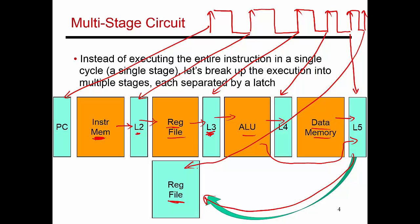You'll see that this entire operation takes about five cycles — five equal-size cycles. Cycle one, cycle two, cycle three, cycle four, and cycle five. In those five cycles, the instruction has moved from one stage to the next, from one latch to the next, and it has finally been completed after five cycles. So this is how I take a single-cycle or single-stage operation and break it up into five stages in this example.